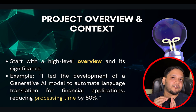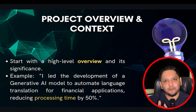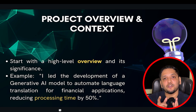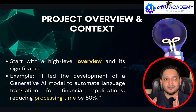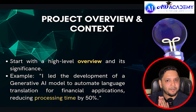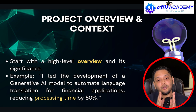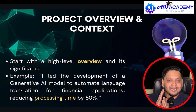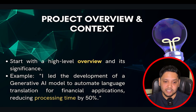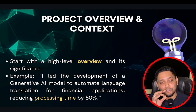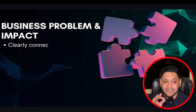Give an overview of the project you have done in a previous company, and align your answer to the domain of the company you are applying to — whether healthcare, telecom, or finance. Start with a high-level overview and its significance. For example: I led the development of a generative AI model to automate language translation for a financial application, reducing processing time by 50%. You should clearly connect the problem to the business outcome.